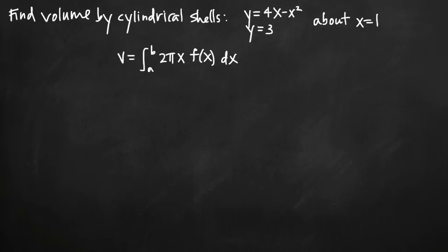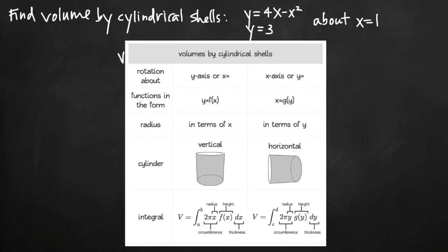When I first started doing these kinds of problems, I'd always get confused. So I made a chart, and that really helped me a lot. I have it on my website on my volumes by cylindrical shells page. Basically, it tells you to start with your axis of rotation — rotating around the y-axis is the same as rotating around some line x equals something, which is a vertical line. Alternatively, you could be rotating around the x-axis or some line y equals something, which would be a horizontal line.